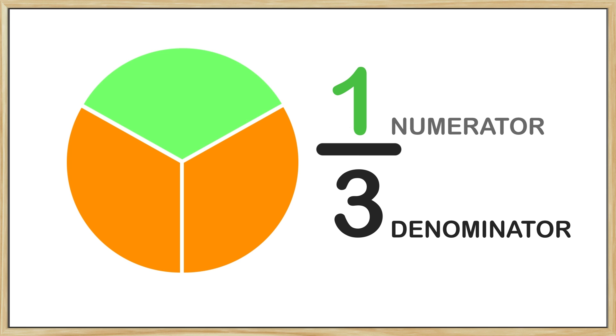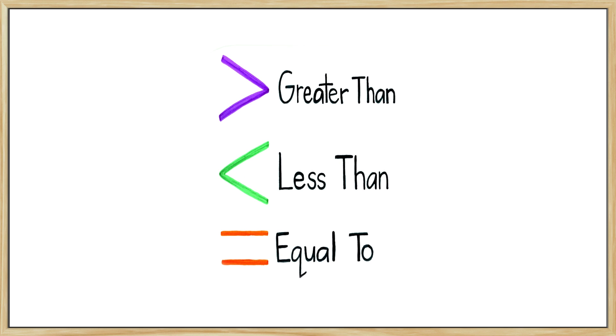The numerator tells us how many equal parts we are talking about. For example, the number one in the numerator is referring to the one green part of the circle. The fraction is 1/3 or one part of the three equal parts. When we compare fractions we want to know if one fraction is greater than, less than, or equal to.